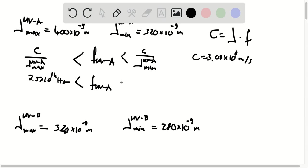And the maximum frequency is 9.37 times 10 to the 14 hertz. So this is the band of frequencies that correspond to UVA radiation.